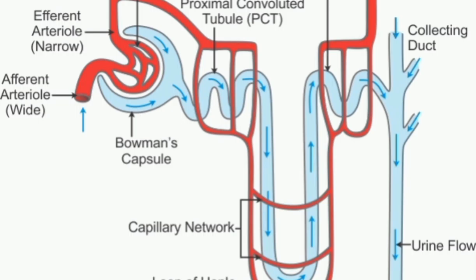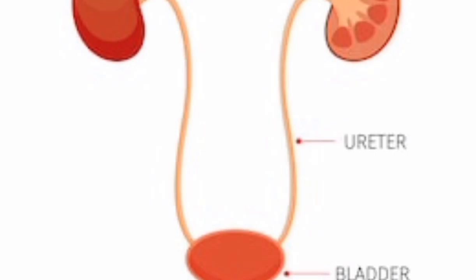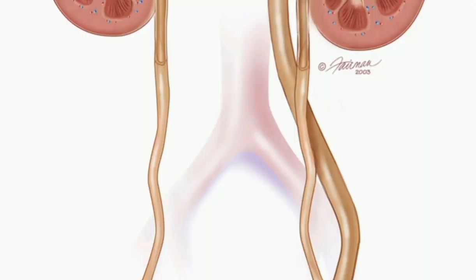All the parts of the renal tubule — proximal convoluted tubule, loop of Henle, and distal convoluted tubule — are covered by a network of peritubular capillaries formed from the afferent arteriole. This network of peritubular capillaries is called the vasa recta. The urine formed in the kidney finally enters into the ureters, which are slender, whitish tubes that emerge from the pelvis of the kidney.